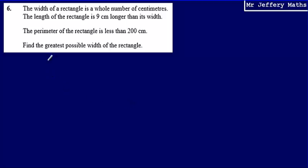This is question six. We're told the width of a rectangle is a whole number of centimetres. The length of the rectangle is nine centimetres longer than its width. The perimeter of the rectangle is less than 200 centimetres. We're asked to find the greatest possible width of the rectangle.